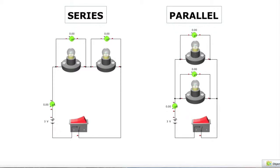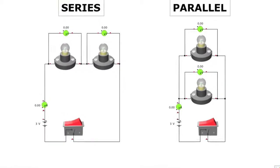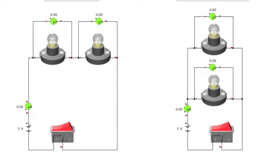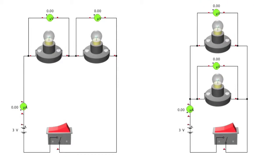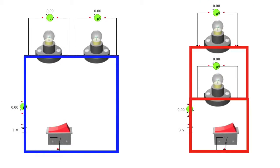But if you look closely you will see there is a difference between the two circuits. The series circuit on the left has two bulbs connected in a single loop, while the parallel circuit has separate loops for each bulb.